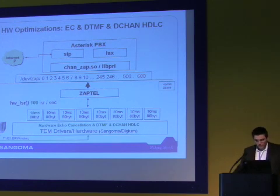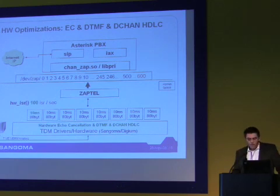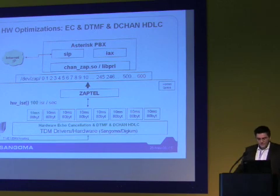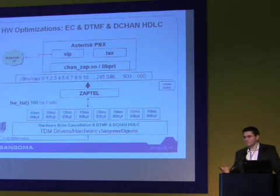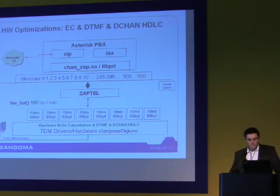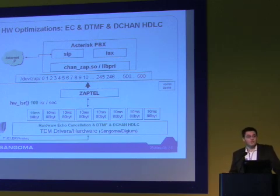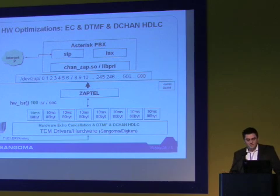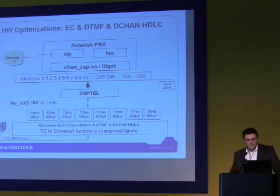What are the optimizations we have made in hardware to battle these problems? First, we've put echo cancellation where it belongs — in hardware. We have chips like Octasic and TI that provide pretty good echo cancellation in hardware. This has solved a pretty big issue, and as soon as we get rid of software echo cancellation it really frees up a lot of things. Zaptel is no longer limited to one millisecond time chunks that software echo cancellation was imposing on us.